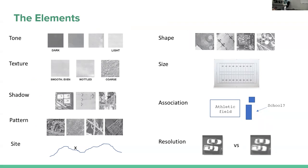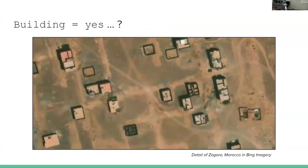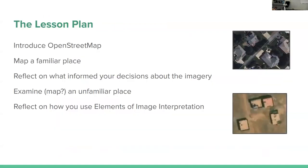Learning this in remote sensing is important because we're trying to figure out how to take imagery and turn it into usable data. When you dive into some of these places that are unfamiliar to you, you might not have as good a plan as if you're mapping your hometown. So my lesson plan — which I want to help build into a TeachOSM module — is: map a familiar place, think about why you knew what that was, and then try to map an unfamiliar place.